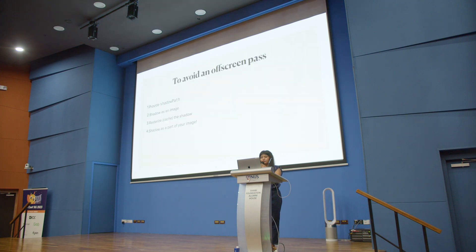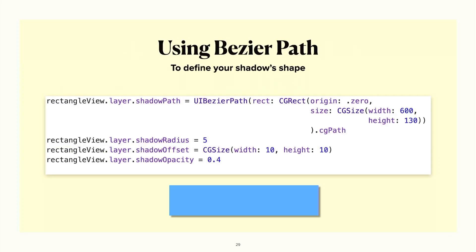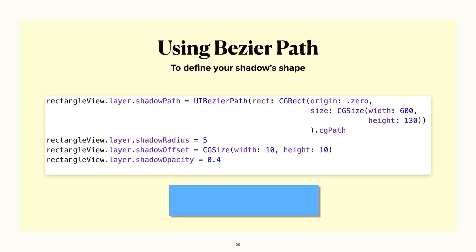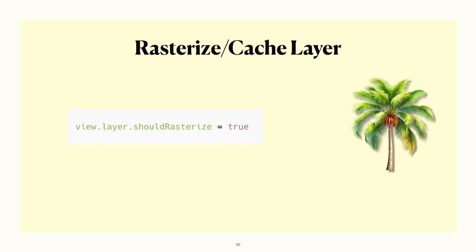The most popular way to avoid off-screen passes is to use a Bezier path. When you add a shadow path, you short-circuit the expensive step of iOS having to figure out the shape of your shadow. When you give it a proper shape, it will just go ahead and draw the shadow without incurring the off-screen pass — making your shadow more performant. Everything else stays the same; you just provide the shadow path. You can draw many complicated paths with Bezier paths because it supports curves, circles, and more. But there are limits — for a complex shape like a tree, nobody's going to define a Bezier path for that.